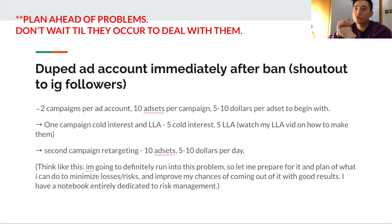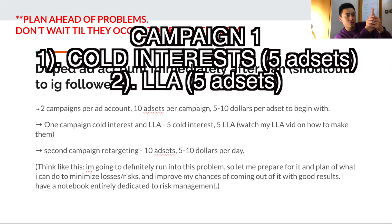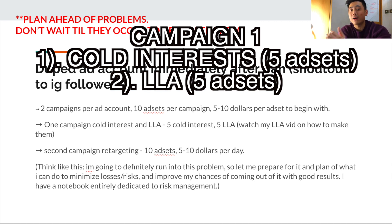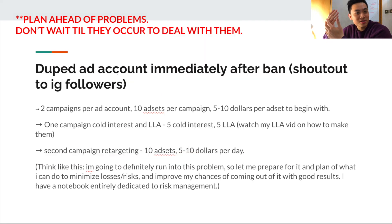For my Facebook ads I ran two campaigns per ad account, 10 ad sets per campaign, and $5 to $10 per ad set to begin with. My first campaign includes five cold interest ad sets and five lookalike audience ad sets - 10 ad sets total. My second campaign is a retargeting campaign: 10 ad sets at $5 to $10 per day covering video views, page views, view content, initiate checkout, and add to cart. I don't retarget purchases as it hasn't worked out for me.